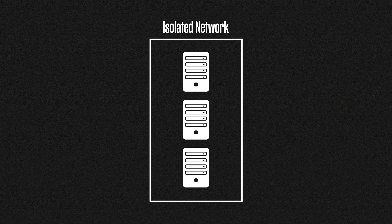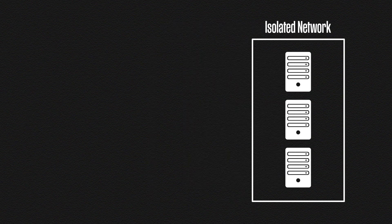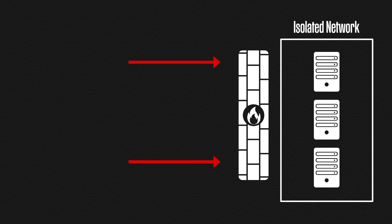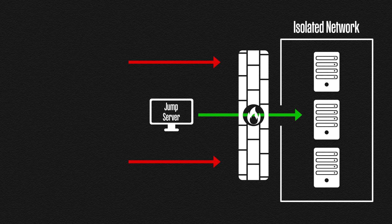Jump servers can be set up in various ways, but here's a general overview of how they work. First, we have our isolated network containing the devices we want to access. We place a firewall in front of it to block all incoming connections from the outside world. Then we add our jump server. We want the jump server to be able to connect to our isolated devices, so we allow connections through the firewall — but only from the jump server. Everything else remains blocked. We don't want to allow everything from the jump server; we just want to allow the protocols we need to connect to our devices, which most of the time will be RDP or SSH depending on your needs.